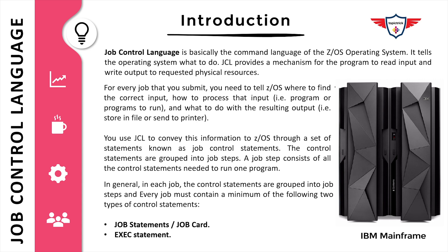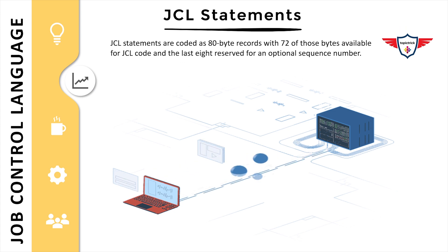Job control statements are grouped into job steps. A job step consists of all the job control statements needed to run a program. In general, every job must contain a minimum of two statements: first, a job card or job statement, and second, an EXE statement or execute statement.